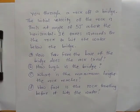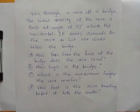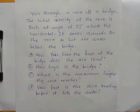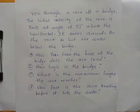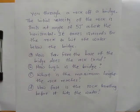Welcome to this video where we are solving a question based on projectile motion. The question goes like this: you throw a rock off a bridge, the initial velocity of the rock is 8 meters per second at an angle of 53 degrees above the horizontal. It takes 12 seconds for the rock to hit the water below the bridge. The questions ask: (a) how far from the base of the bridge does the rock land, (b) how high is the bridge, (c) what is the maximum height the rock reaches, and (d) how fast is the rock traveling before it hits the water.